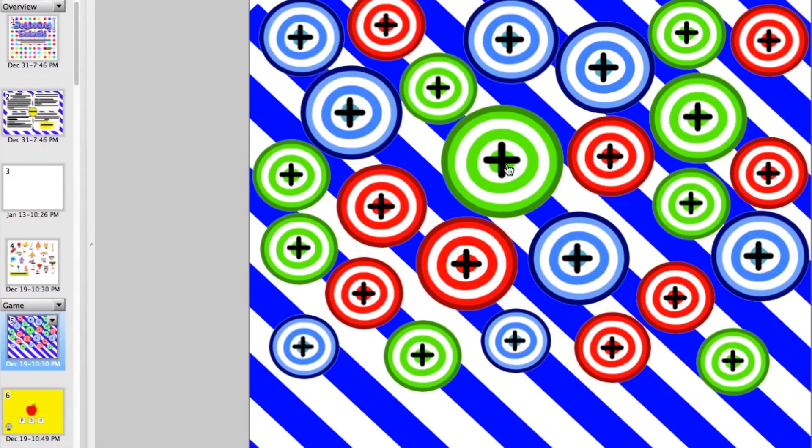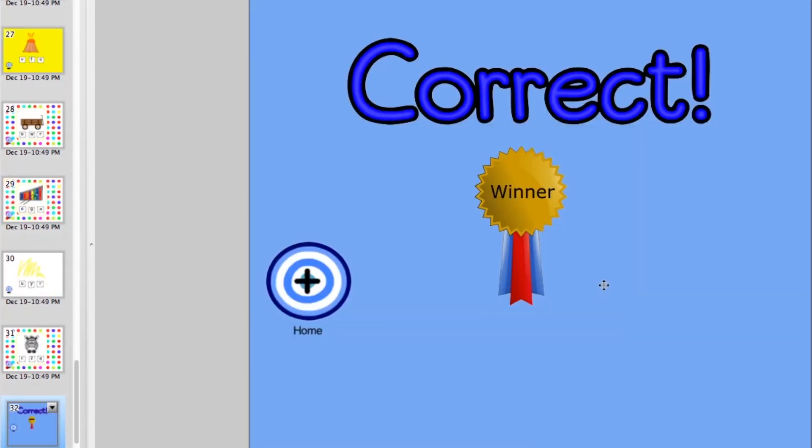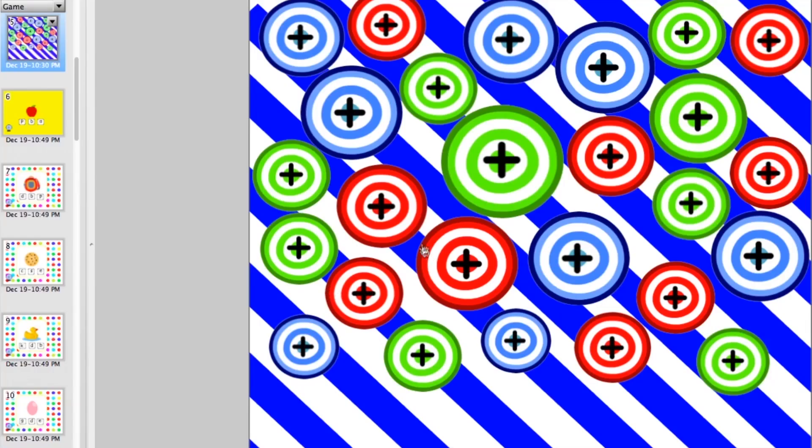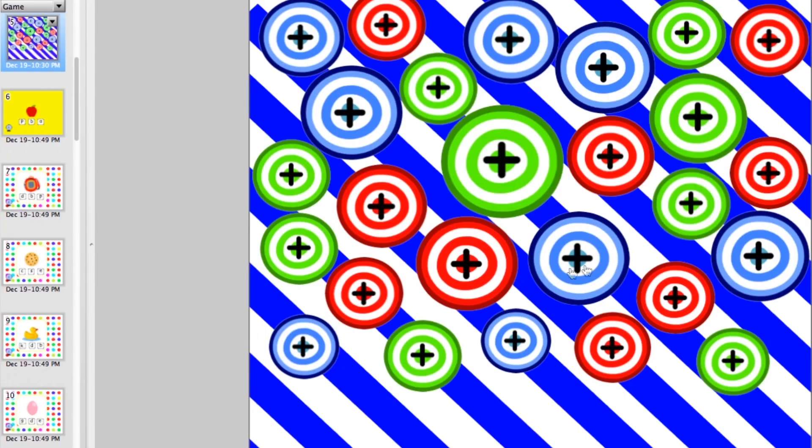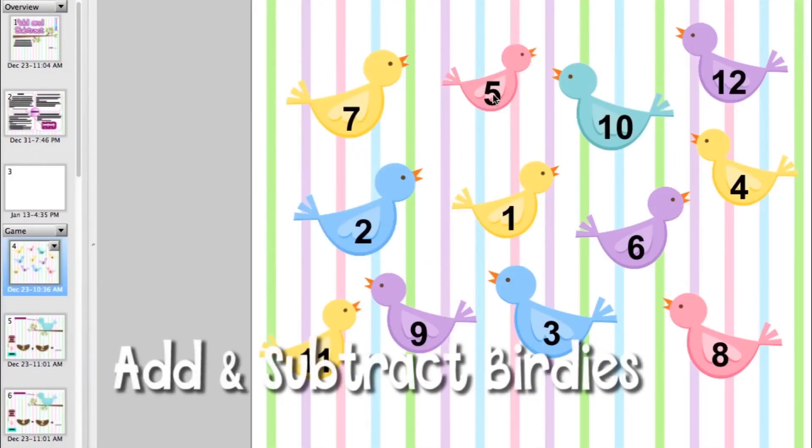In the beginning sounds game, they touch a bullseye and then pick the letter that the picture begins with. If they're correct, the correct image appears. If they're not correct, then an incorrect page will appear.